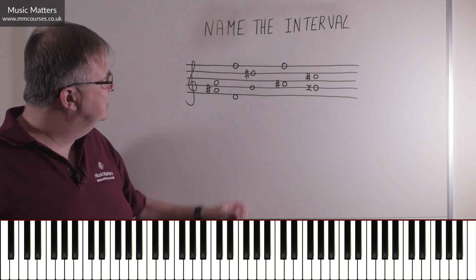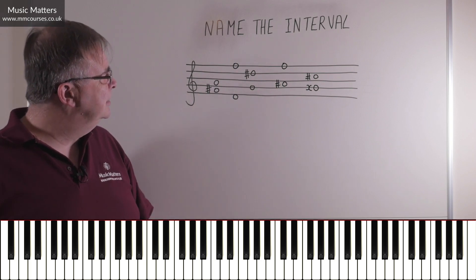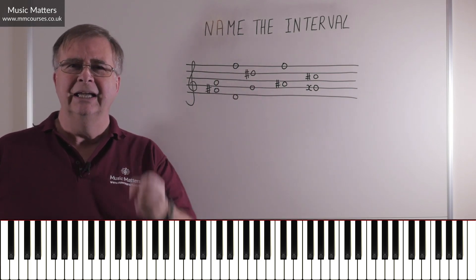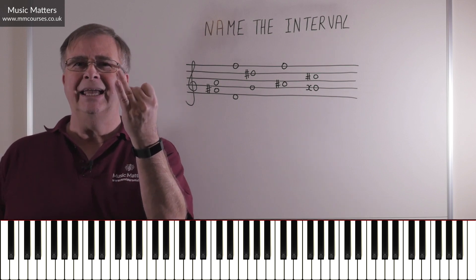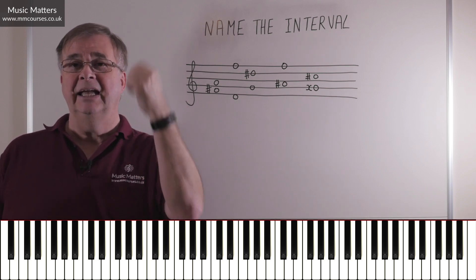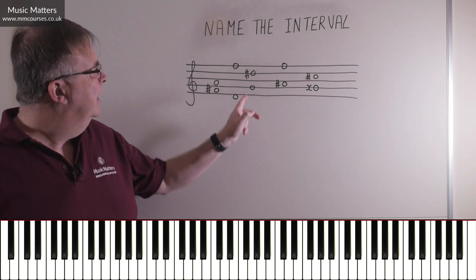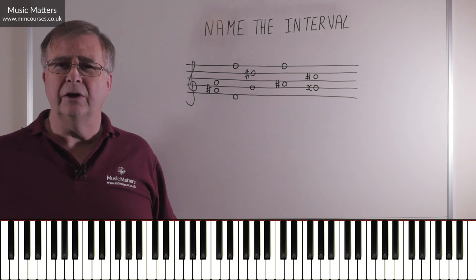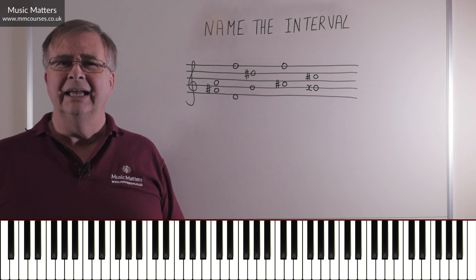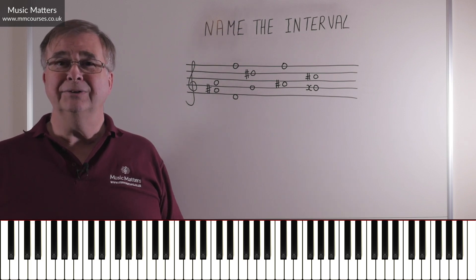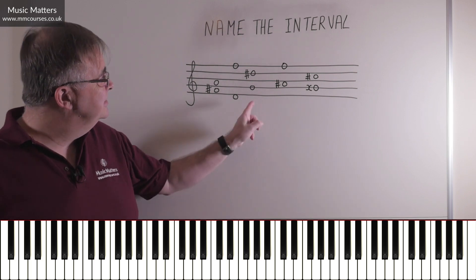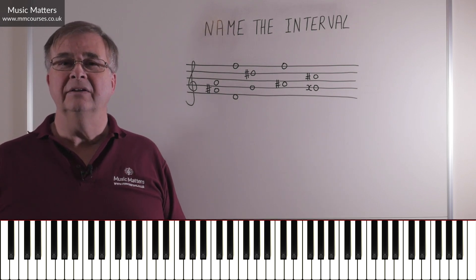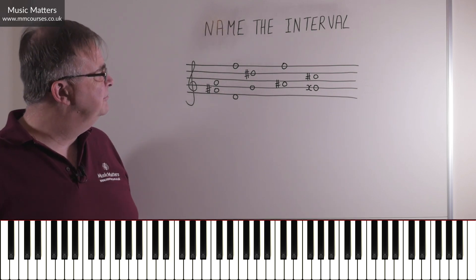Here comes the third interval. We've got G at the bottom and D-sharp at the top. So what's the number? G, A, B, C, D — it's some kind of fifth. If you want to know what sort of fifth it is, the answer is that it is an augmented fifth.